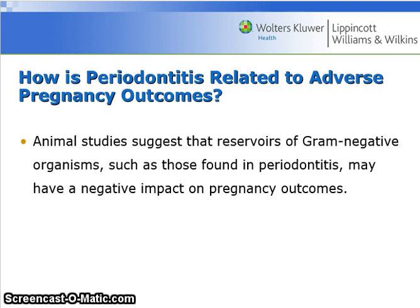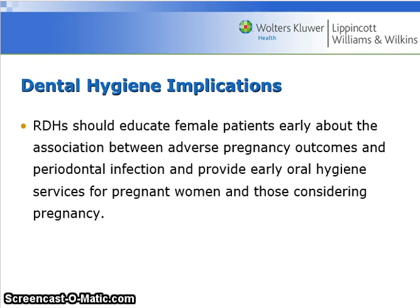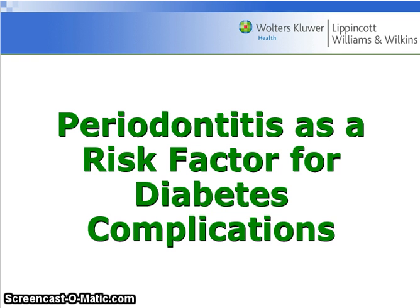Animal studies suggest that reservoirs of gram-negative organisms, such as those found in periodontitis, may have a negative impact on pregnancy outcomes. This diagram illustrates the proposed biologic pathway. Hygienists should educate female patients early about the association between adverse pregnancy outcomes and periodontal infection, and provide early oral hygiene services for pregnant women and those considering pregnancy.